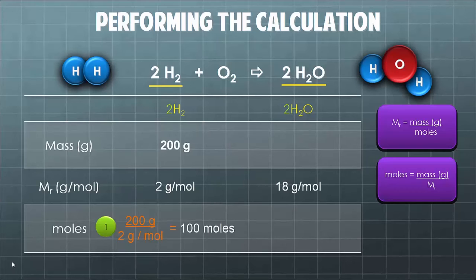The next step is to have a look at the ratio in which these combine. So we have 2 moles of hydrogen gas producing 2 moles of water. So that means that for every 100 moles we put in, we're going to get 100 moles out.